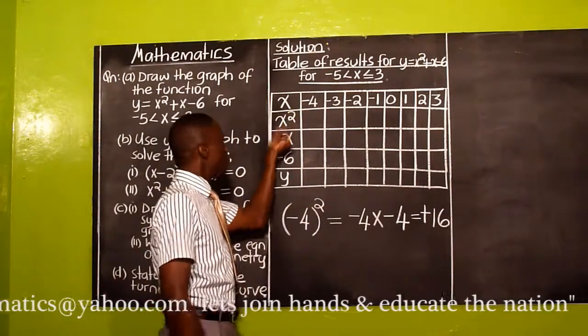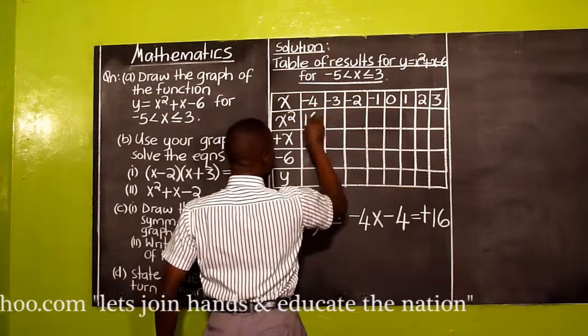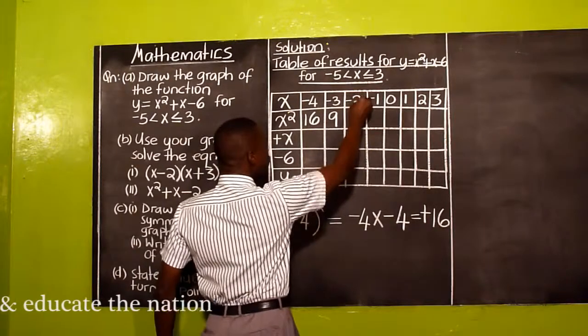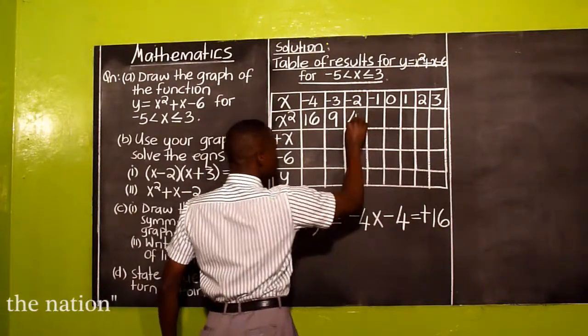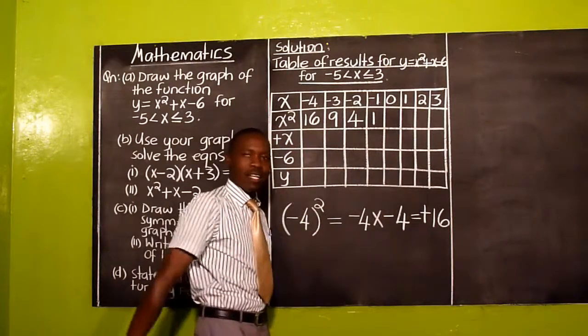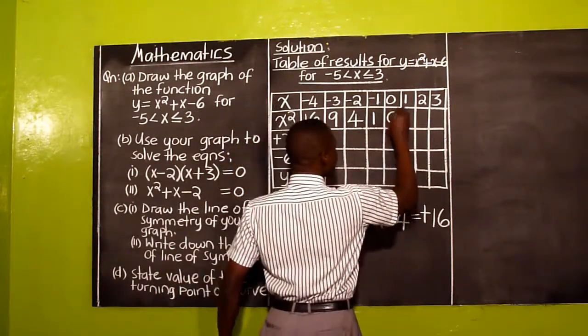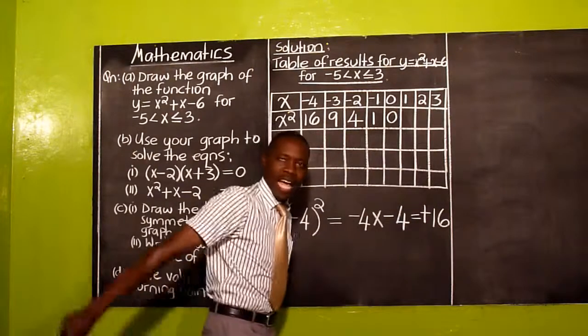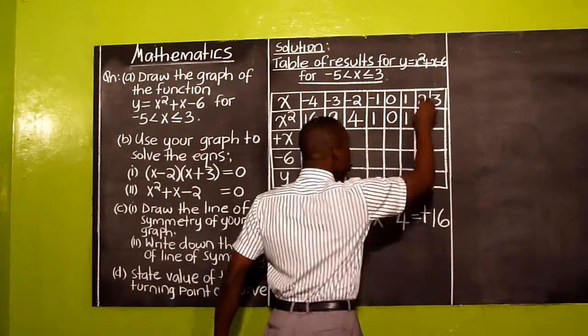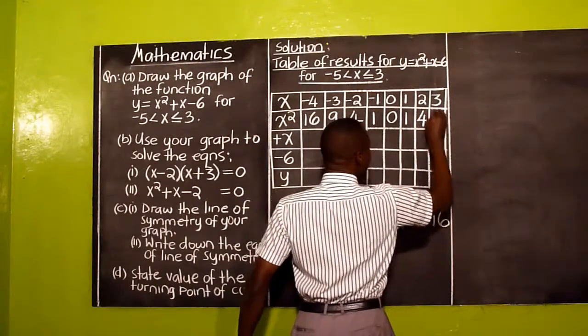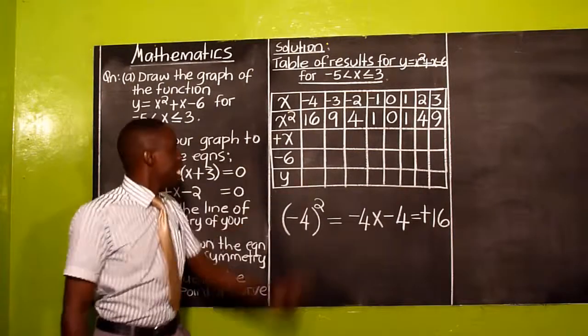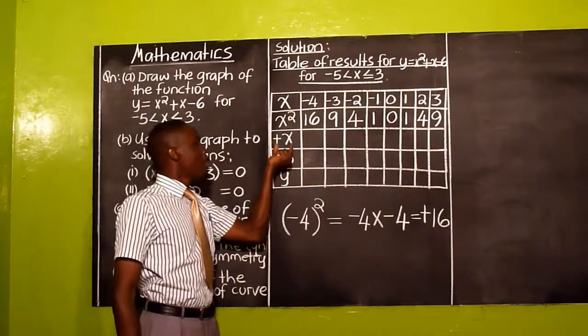-3 squared will give us 9. -2 squared gives us 4. -1 squared gives us 1. 0 squared gives us 0. 1 squared, that is 1 times 1, gives us 1. 2 squared gives us 4, and then 3 squared giving us 9. The next one says positive X.